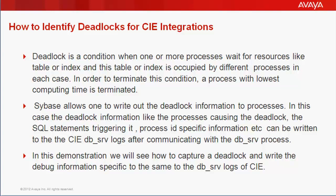In order to terminate this condition, a process with the lowest computing time is terminated. In this case, the deadlock information like the processes causing the deadlock, the SQL statements triggering the deadlock, the process ID or SPID specific information relevant to the processes, etc., can be written onto the CIE DB_SRV logs after communicating with the DB_SRV CORBA processes.